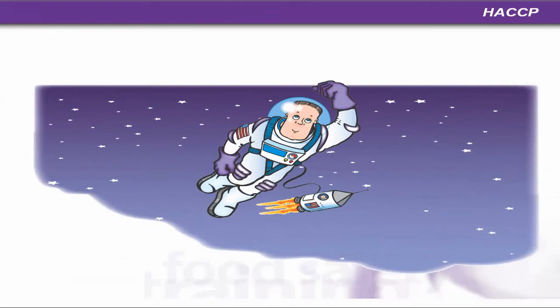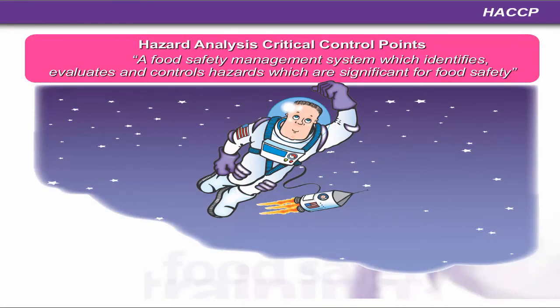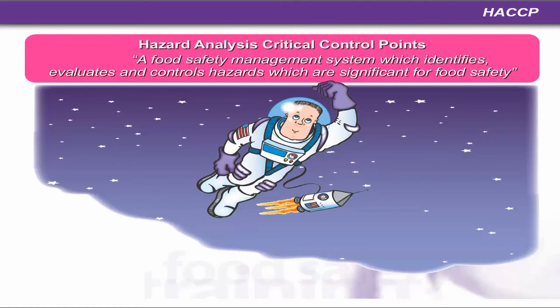HACCP stands for Hazard Analysis Critical Control Points. It is a food safety management system which identifies, evaluates and controls hazards which are significant for food safety. It was commissioned at NASA in 1959 to produce safe food for US astronauts — because if astronauts went into space and suffered food poisoning, with symptoms of sickness and diarrhea, the consequences in a space suit would be very serious. It was developed from systems used in jet engine manufacturing during the late 1940s and early 1950s, then adapted to be more flexible for use in the food industry.